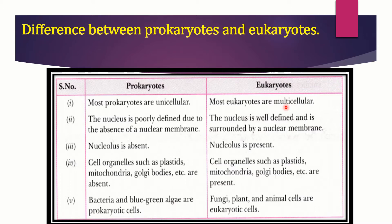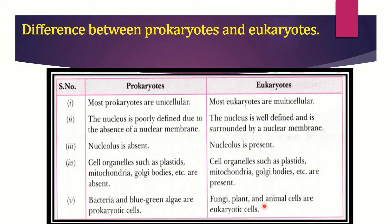Let us differentiate between prokaryotes and eukaryotes. Most prokaryotes are unicellular and most eukaryotes are multicellular. In prokaryotes, the nucleus is poorly defined due to the absence of a nuclear membrane, whereas in eukaryotes the nucleus is well defined and surrounded by a nuclear membrane. In prokaryotes, the nucleolus is absent; in eukaryotes, the nucleolus is present. In eukaryotes, cell organelles such as plastids, mitochondria, golgi bodies, etc. are present. Bacteria and blue-green algae are prokaryotic cells. Fungi, plant, and animal cells are eukaryotic cells.